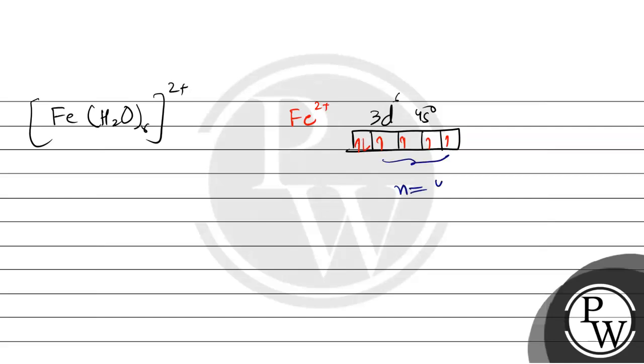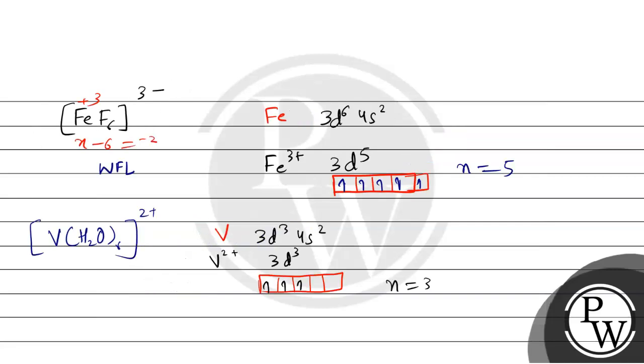The magnetic moment, we have equal to n into n plus 2. So μ directly proportional to unpaired electrons. n is equal to 5 here, here.